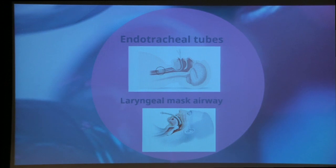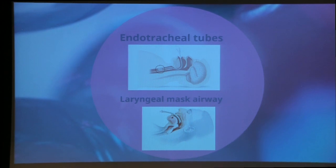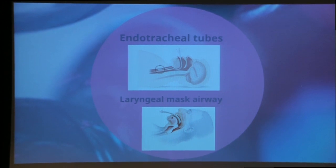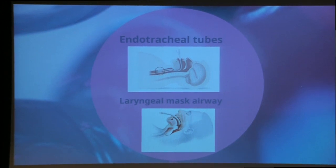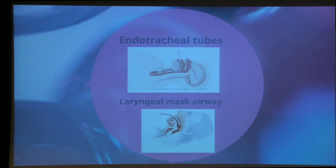The main difference with the ET tube is that it goes all the way down into the trachea and completely seals off the airway, so air can only go in and out of the lungs. The LMA sits higher, and sometimes secretions from the stomach and esophagus can come up and get into the lungs and cause problems.